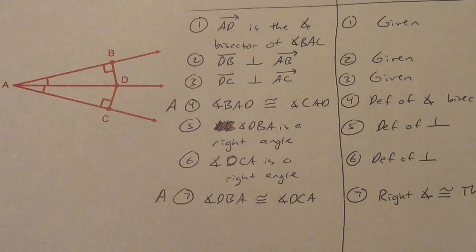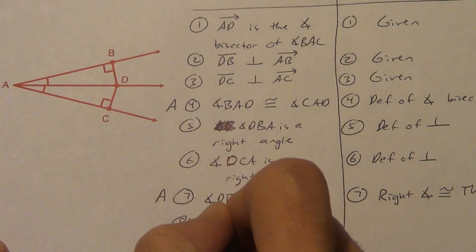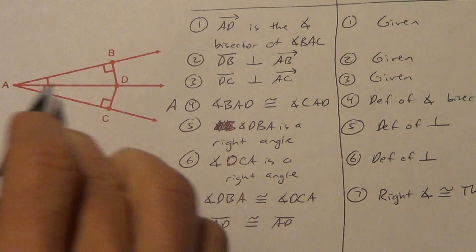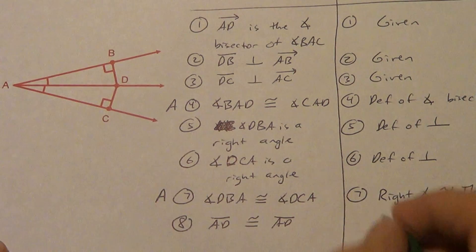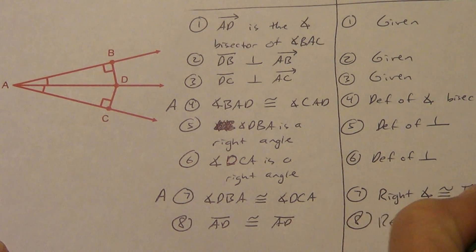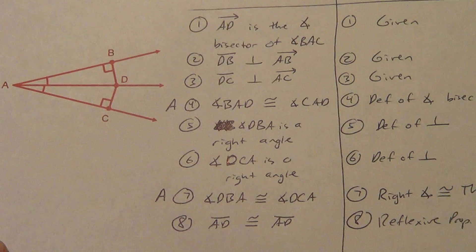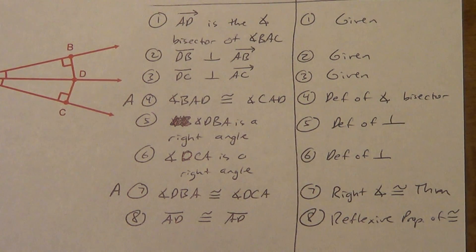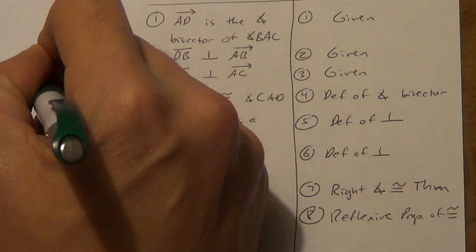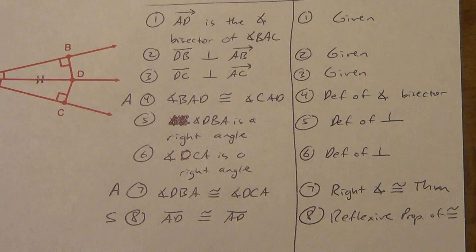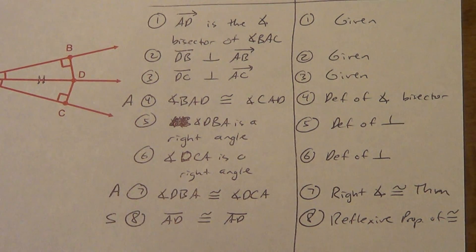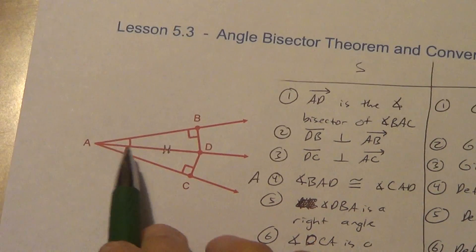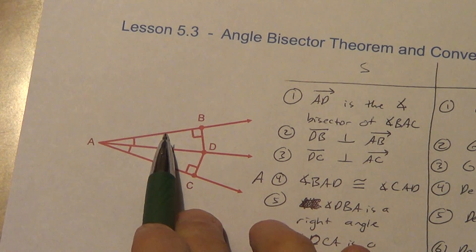I've got angles marked, so now I need a side. Remember, there's no angle-angle-angle. What's the easy side? AD is congruent to AD — reflexive property of congruence. That's a side. Now, I have two angles and a side. Is the side between the angles? Looking at the picture, no — AD is not stuck between the two angles. So it's not angle-side-angle; it's got to be angle-angle-side, which is a theorem.